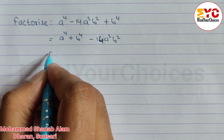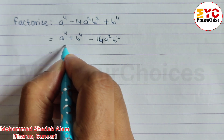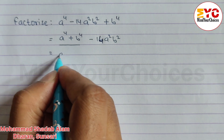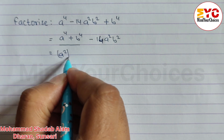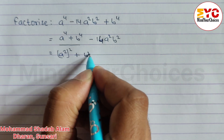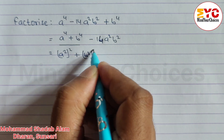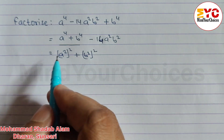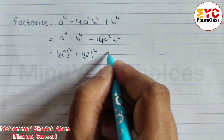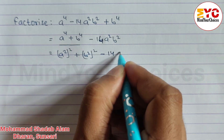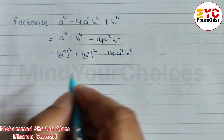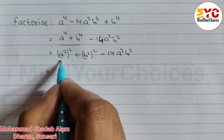Now these two terms we have to convert into the form of a whole square, so we can write: a square whole square plus b square whole square. This is in the form of a square plus b square, and we keep minus 14 a square b square the same.